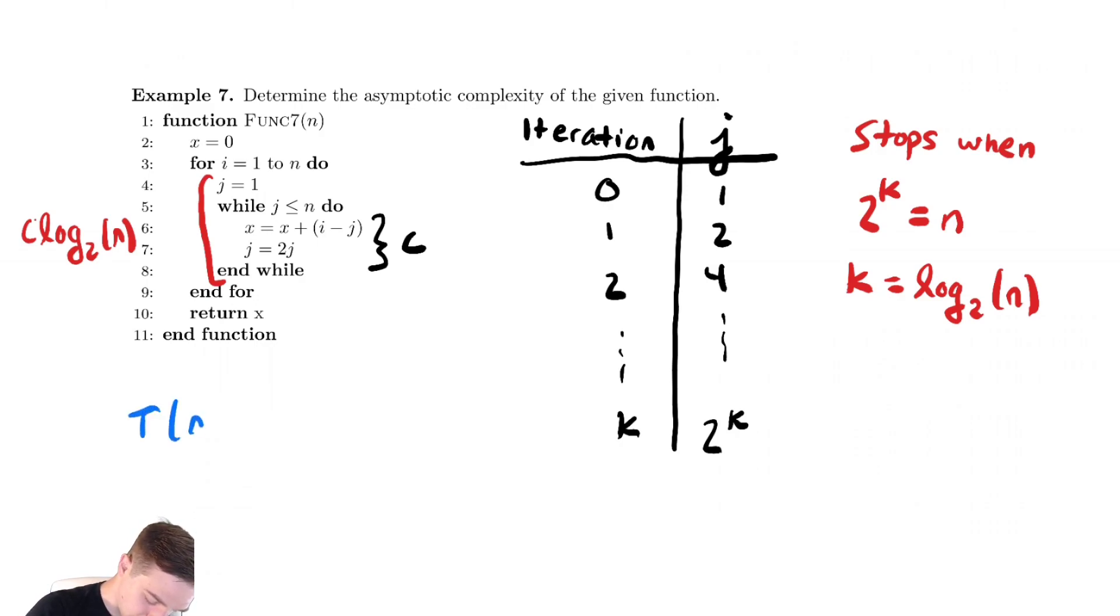t of n, the runtime for the entire algorithm is the sum from i equals 1 to n of c log base 2 of n.